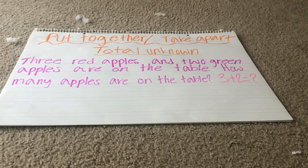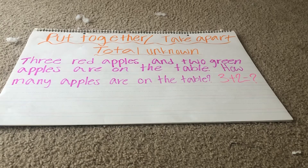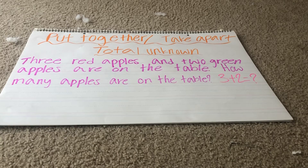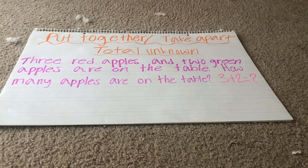Hey class, I'm going to show you two more word problem examples for our next type, which is put together or take apart with our total unknown. These are where we just want to know the total. So it could be subtraction or it could be addition.